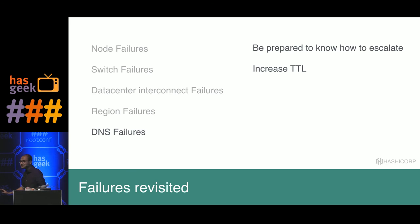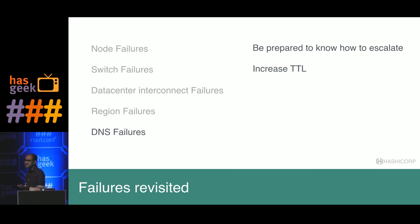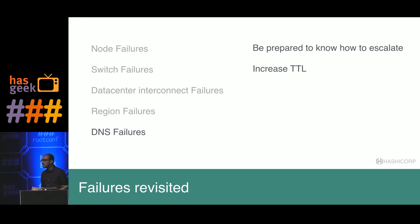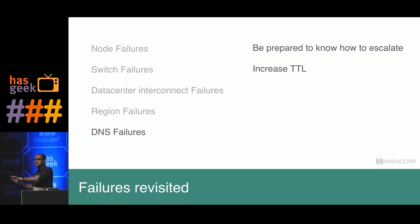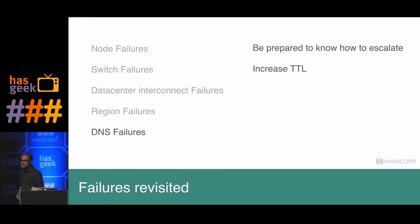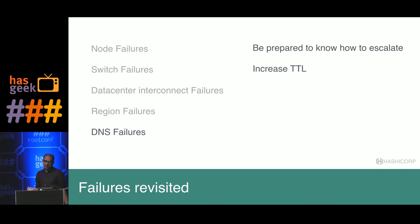DNS failures are the worst. When UltraDNS had that DDoS attack, there was not much you could do — your only recourse is resolving TTLs. Make sure you can change DNS records from one provider to another. Most DNS providers don't play well with each other, their APIs are not great, but you have to be ready. You just need to know who to escalate when that happens. We had to move our records from one provider to another.